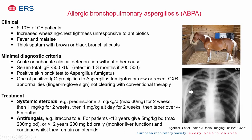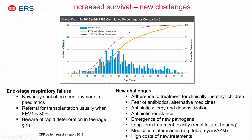Allergic bronchopulmonary aspergillosis (ABPA) affects up to 10% of CF patients. Consider ABPA when a child has wheeze or unexplained lung function decline, especially with thick sputum containing dark-colored casts. Diagnostic criteria include very high IgE levels reflecting an allergic response to Aspergillus in the airways. The mainstay of treatment is systemic steroids, using various protocols, and antifungals such as itraconazole or voriconazole are often added to try to eradicate the Aspergillus.